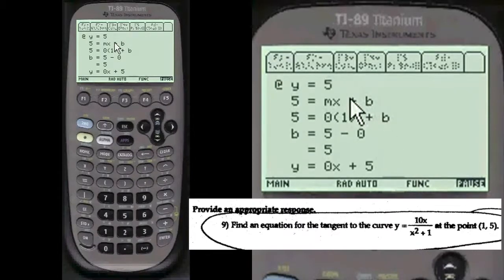Now we figure out the equation, and if y equals 5, then y equals mx plus b, 5 equals mx plus b, and 5 equals, here's the slope m, which is 0, and here's x, which is 1. And we're going to find out what b is. So b is equal to 5 minus 0 equals 5. So the equation to the tangent line is y equals 0x plus 5. Pretty neat.